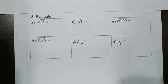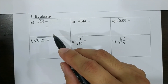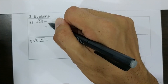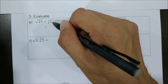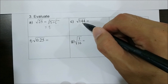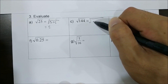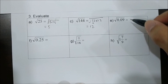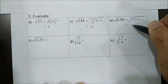Question 3: evaluate the value of square root of 25. The square root of 25 means we want to find the value which, when squared, gives 25. 5 times 5 is equal to 25, so the square root of 25 is 5. Square root of 144 means finding the value which, when squared, gives 144. 12 times 12 is 144, so the answer is 12. Square root of 0.09 is actually 0.3 times 0.3, so the answer is 0.3.